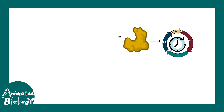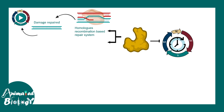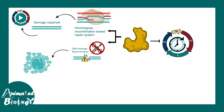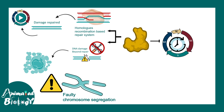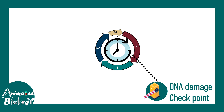To recap: p53 pauses the cell cycle, giving it enough time to repair the DNA — for example, via homologous recombination-based repair. But if the damage is not repairable, the cell would choose apoptosis. It is better to undergo apoptosis than to segregate a faulty chromosome, because once mutations accumulate in the genome, they increase the risk of tumor formation.